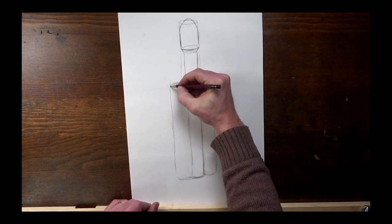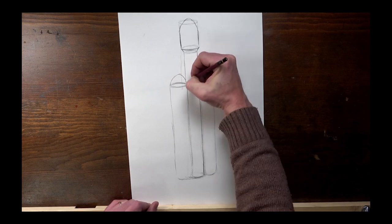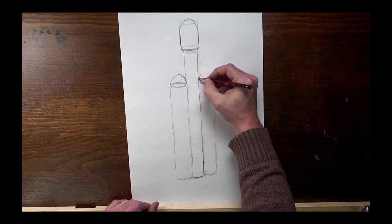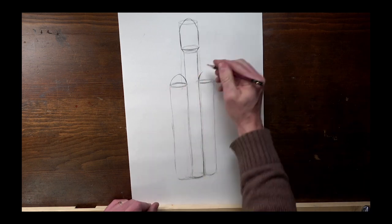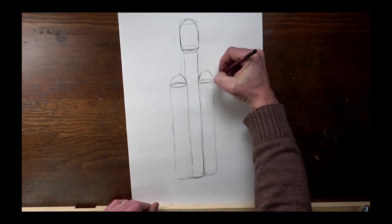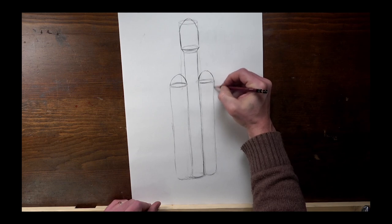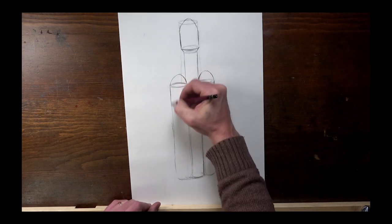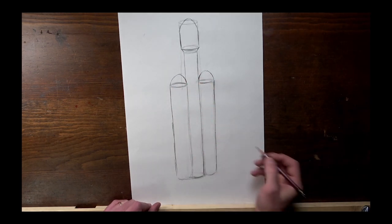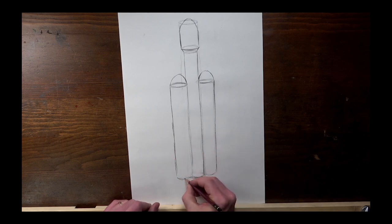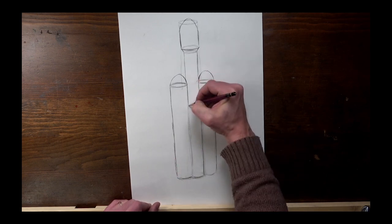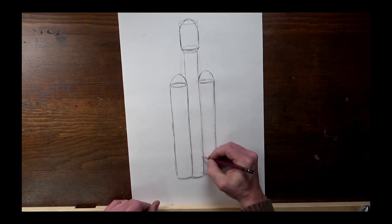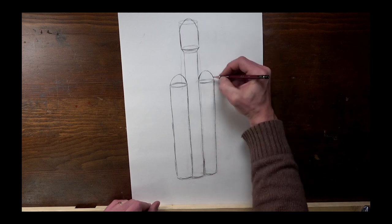So now the tops of these side canisters for fuel, they are rounded as well. This one kind of disappears behind the rocket because we're viewing it a little bit from an angle. And now what I'm doing is I'm kind of strengthening the external contour of all these objects. Just kind of making them a little bit bolder.